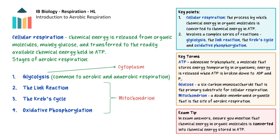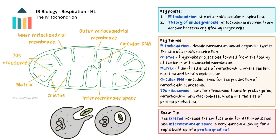Except for glycolysis, which occurs in the cytoplasm, all other stages take place inside the mitochondria. So before we discuss the stages of aerobic respiration let's remind ourselves where these processes happen. Apart from glycolysis which occurs in the cytoplasm, the rest of respiration occurs in the mitochondria.